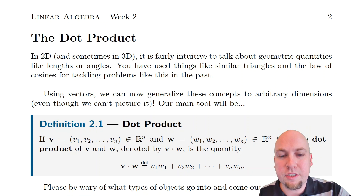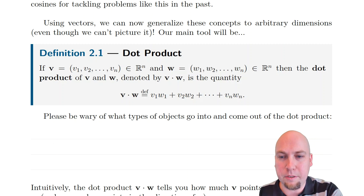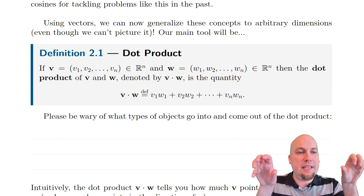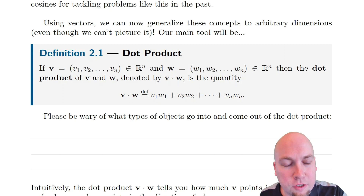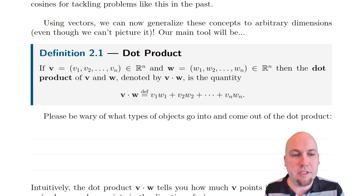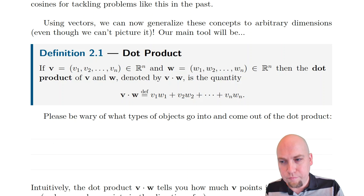So what is the dot product? It's an operation that takes in two vectors, v and w. We denote it by v dot w, and what it is is the quantity you get if you multiply together those two vectors entry-wise and then add up all of those products. So you multiply the first entries v1 times w1, then v2 times w2, all the way up to vn times wn, and add them all up. That gives you a number called the dot product.